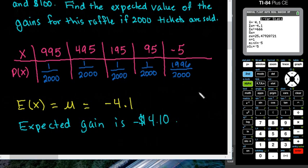In a situation like this where it's a raffle, most likely they're raising money for something, so that means that the charity would end up earning money at the end. But most likely you are not going to win because your expected gain is negative $4.10.